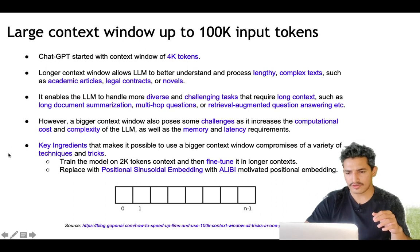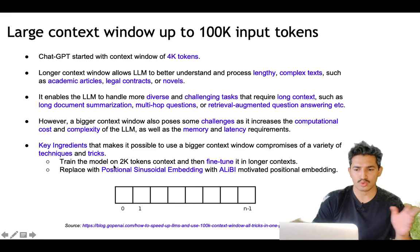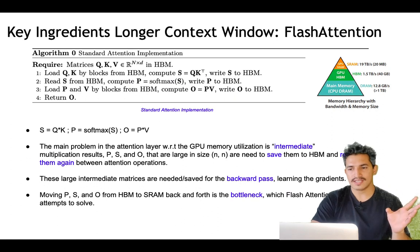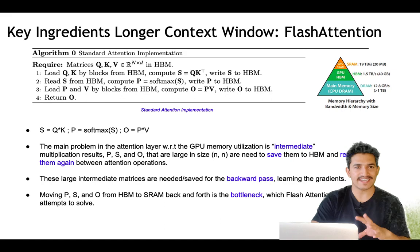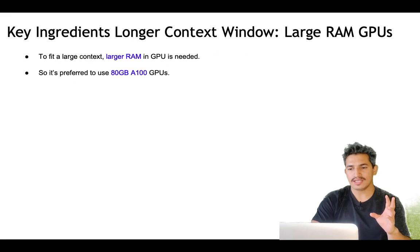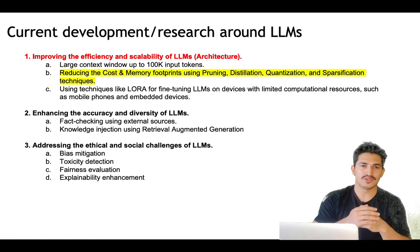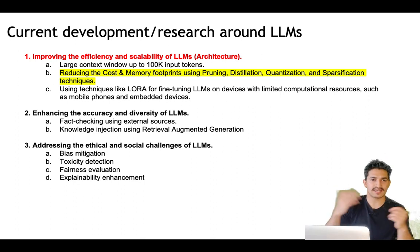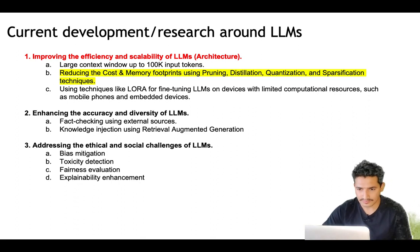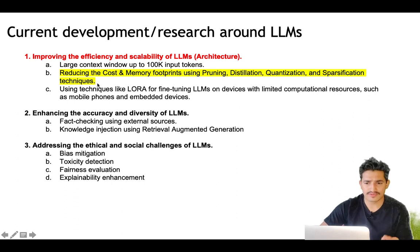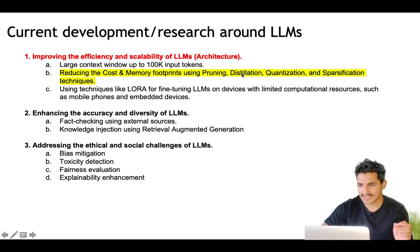These are some advanced but clever tricks and techniques that enable a scalable architecture and allow larger context windows up to 100k input tokens. We saw that a larger context window helps process complex tasks and lengthy documents like whole novels or research papers, enabling question answering over them. The next set of techniques used to scale LLM architecture focus on reducing cost and memory footprints using pruning, distillation, quantization, and sparsification.